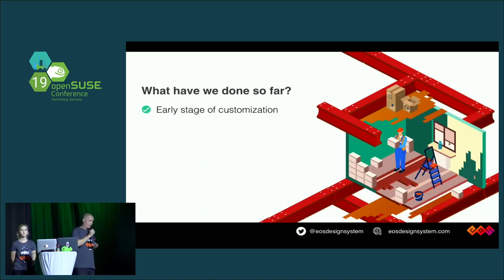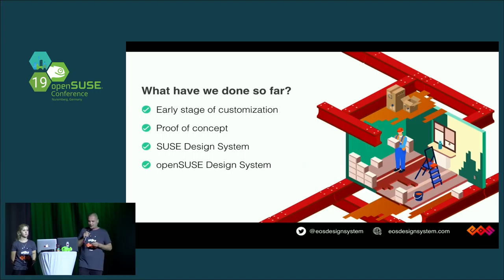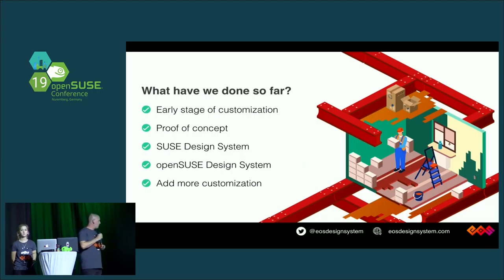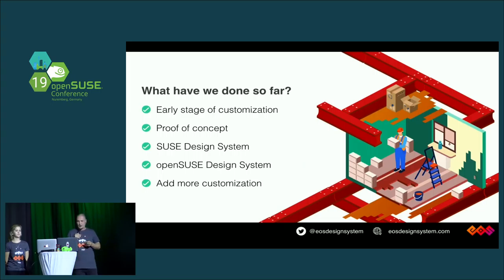We managed to do that, and then we wanted to prove that EOS is customizable. This is how we deployed the OpenSUSE design system — it's a fork of EOS but with the branding of OpenSUSE. The proof of concept is there. We proved that you can customize the design system for your needs. Now the idea is to take this beyond proof of concept — we want to be able to customize it completely, which means adding a content management system where once you start using EOS, you can easily add new components to it, making it accessible to designers and everybody who may work with it.